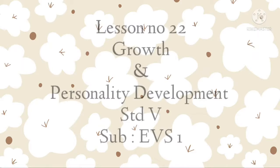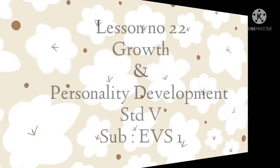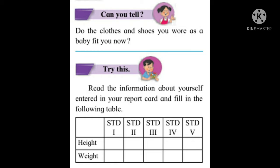Hello everyone, I'm going to teach you EBS Lesson Number 22: Growth and Personality Development. Can you tell — do the clothes and shoes you wore as a baby fit you now? Of course the answer is no. Read the information about yourself entered in your report card and fill in the following table for standards first through fifth, noting your height and weight. As you grow, your height and weight increase.